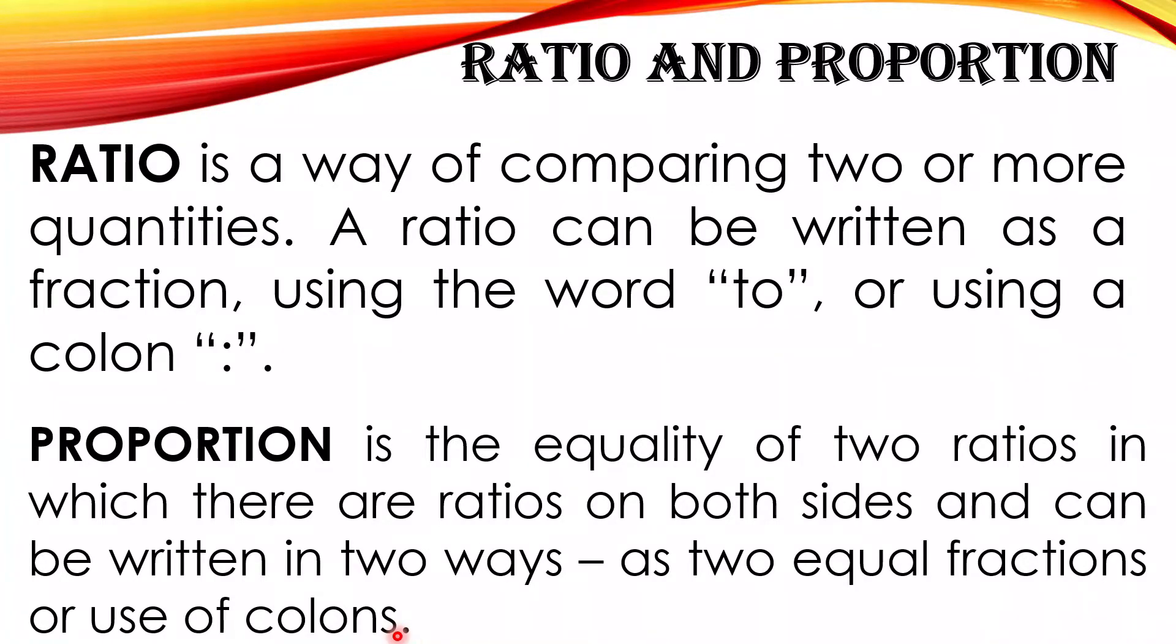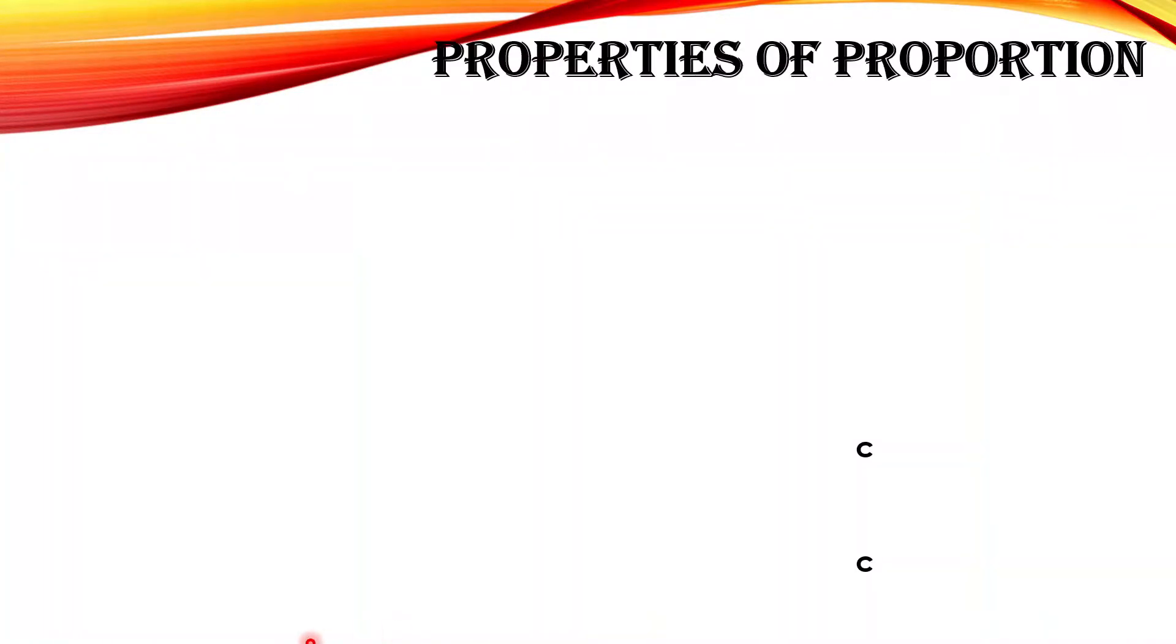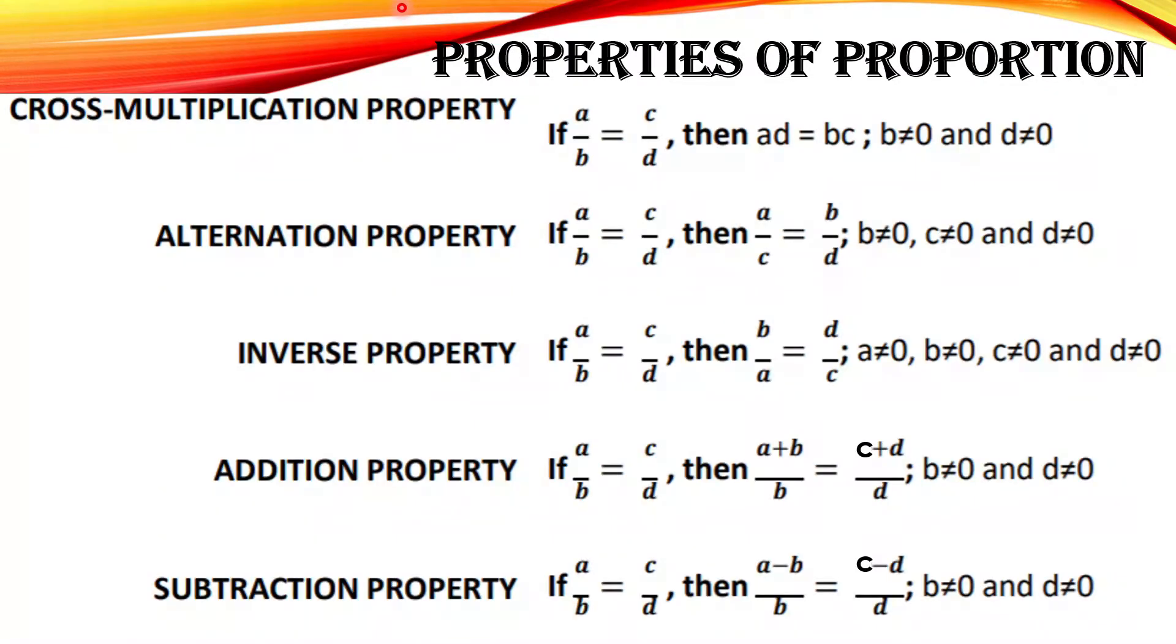But before we proceed, let's discuss these properties of proportion. We have here cross multiplication property. So if a is to b is equal to c is to d, then a times d is equal to b times c. Cross multiplication: b and d is not equal to zero.